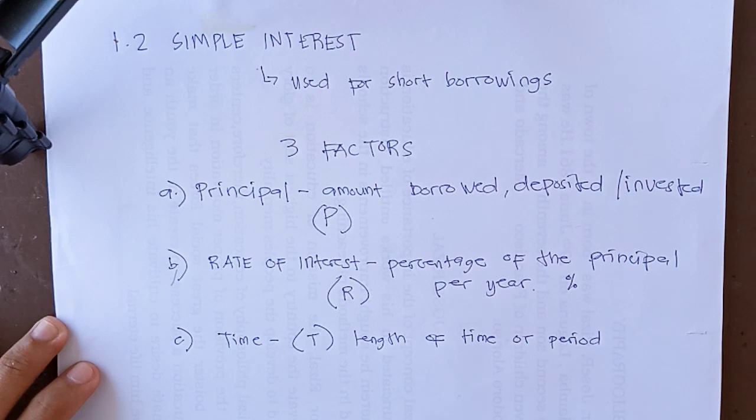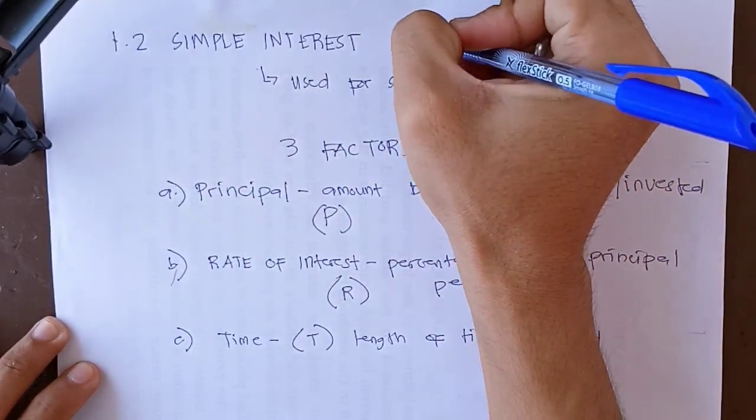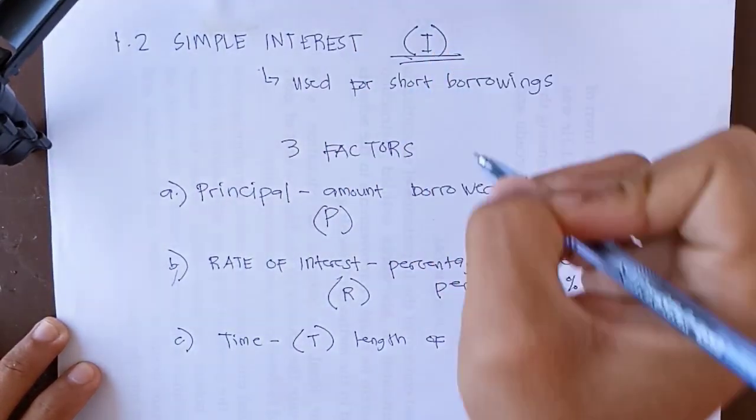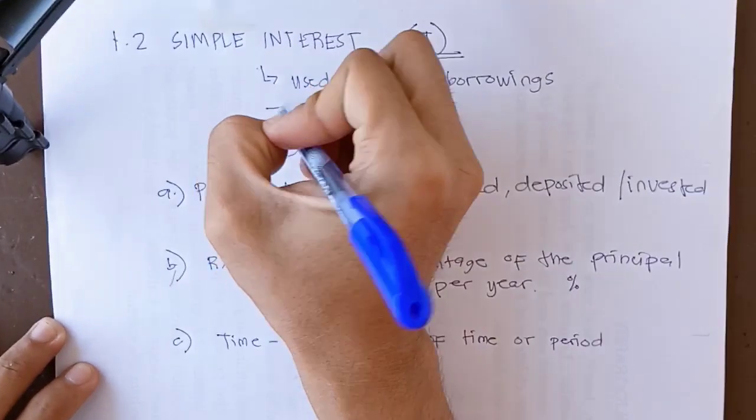And also, I would like to add, simple interest is denoted as the capital I. So it is the interest charged on the principal for the entire duration.